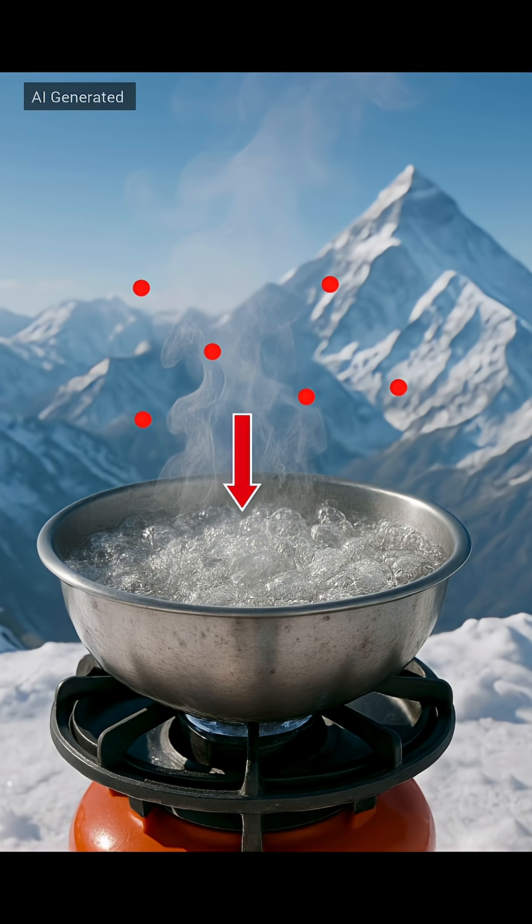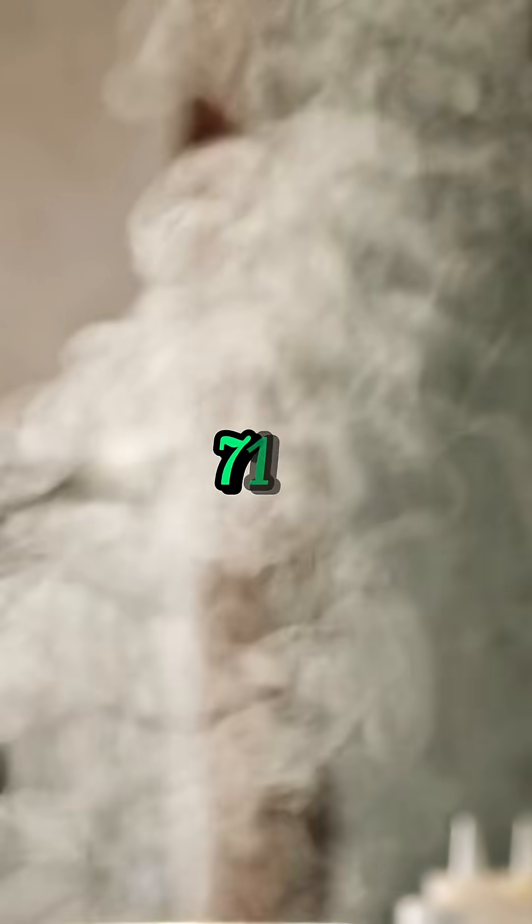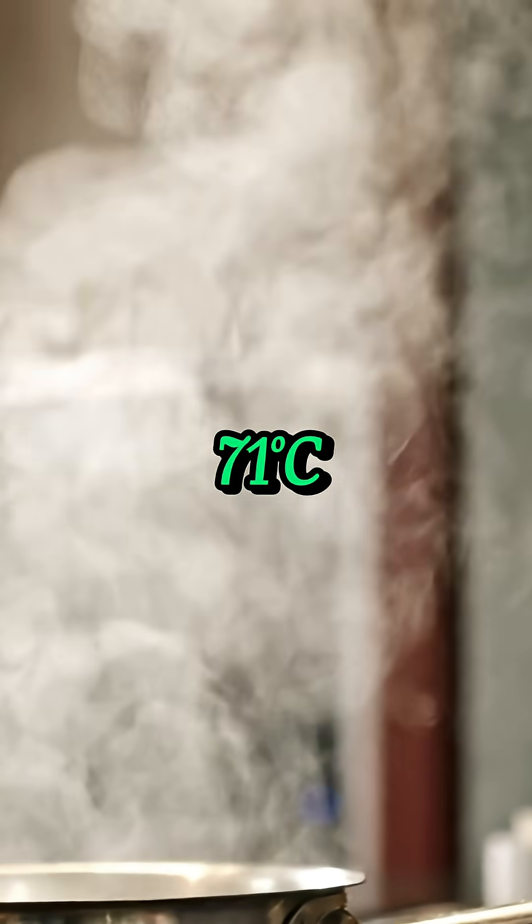So when you boil the water, it doesn't need to get very hot because there is less air pressing down on the water. As a result, the water turns into steam more easily and boils at about 71 degrees Celsius. That's why water boils at a lower temperature at higher altitude.